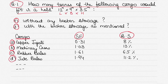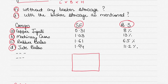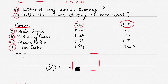The other cargoes are machinery in cases, rubber bales, jute bales, and so on — about seven or eight in total, each with a stowage factor and broken stowage listed. The stowage factor is the volume occupied by a unit weight of the cargo. So if you have a cargo hold and a single unit of cargo — it could be a pallet, a drum, or something else — the volume it occupies per unit weight is called the stowage factor (SF).